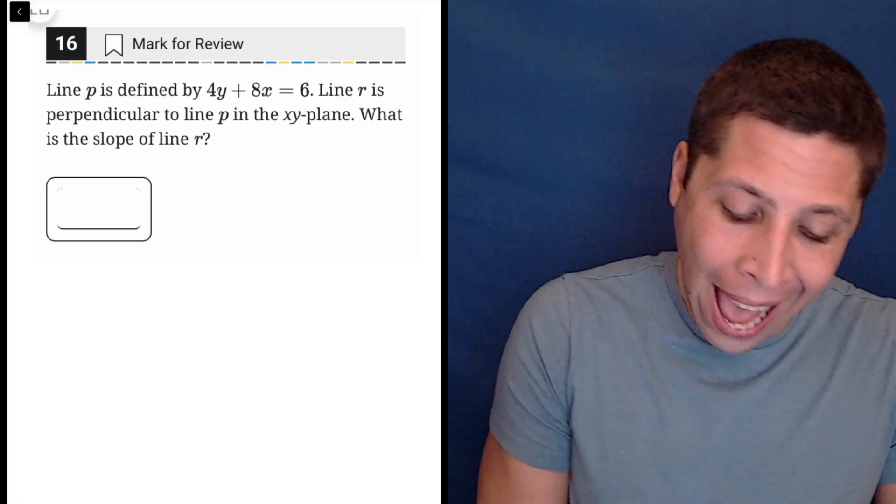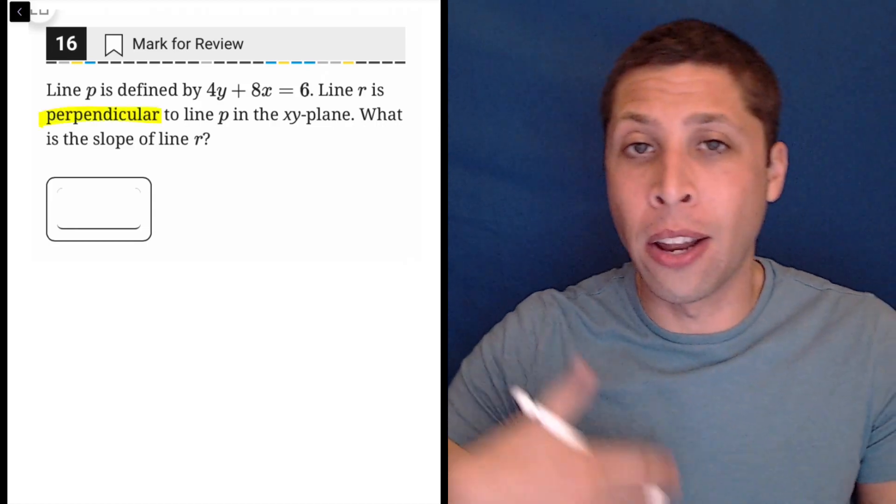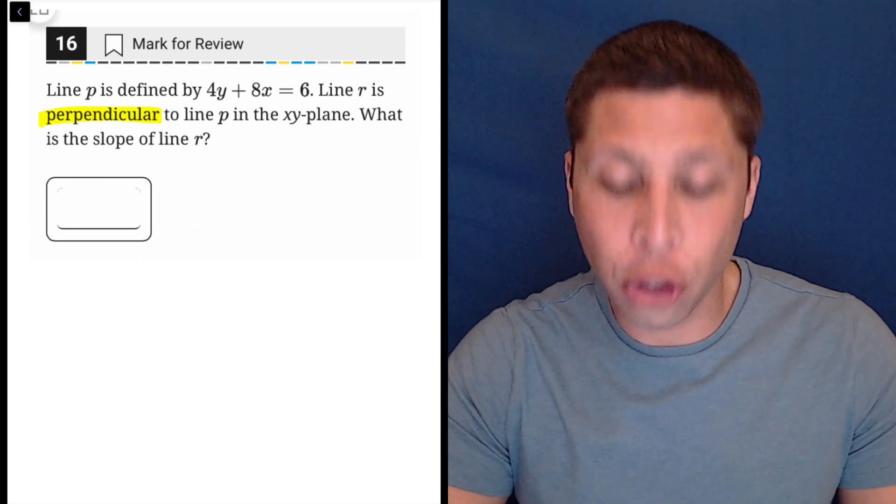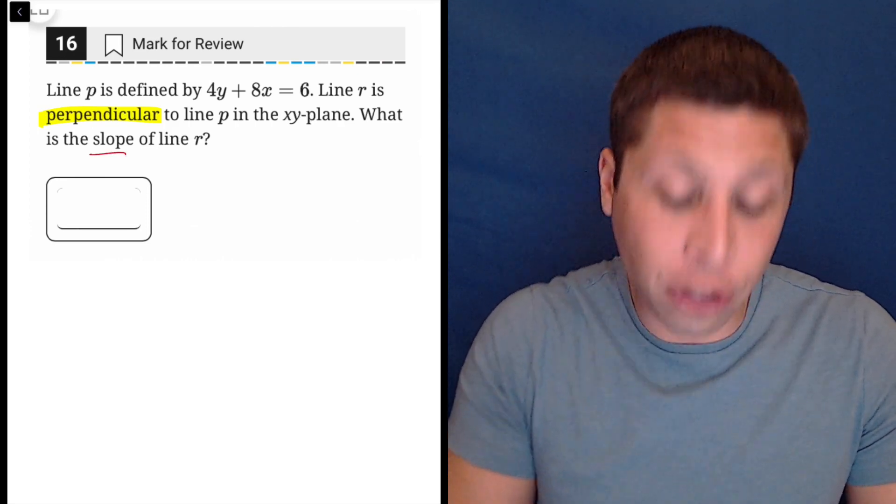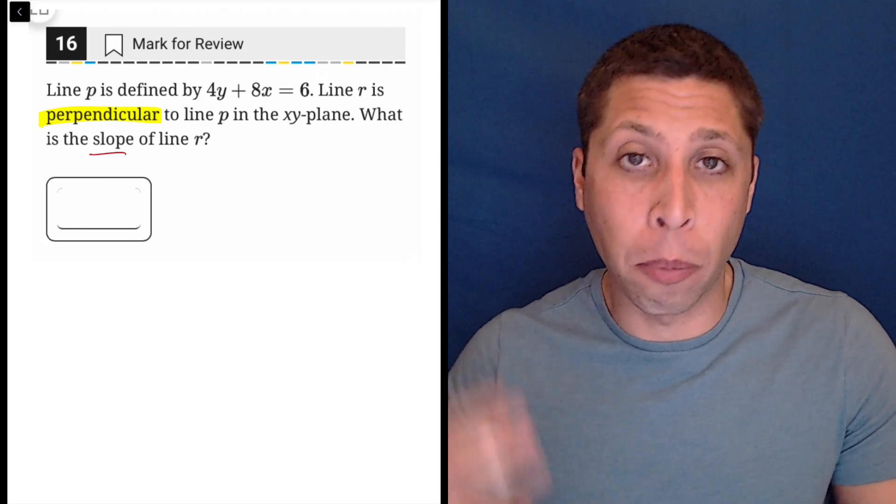This question is almost entirely about vocabulary. You need to understand what they're telling you when they say that two lines are perpendicular. Basically, it has to do with slope. So it's good that they asked about slope. We're going to need it.